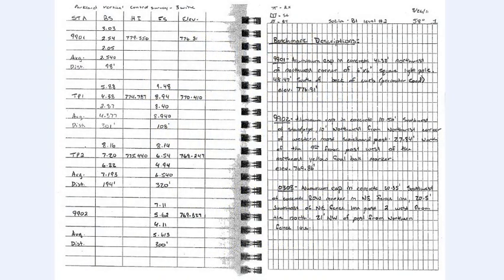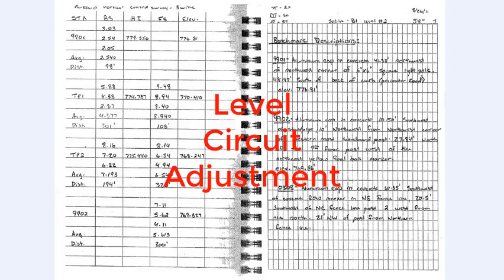In any level circuit performed to establish new vertical control points, commonly called benchmarks, there will be some closure error at the end of the circuit. When our closure error is within an acceptable limit then we can distribute that error within the circuit to minimize its impact on future surveys. We call this process a level circuit adjustment.